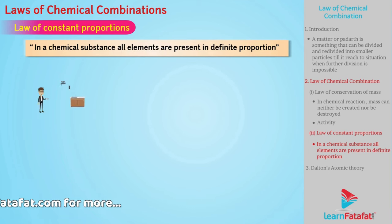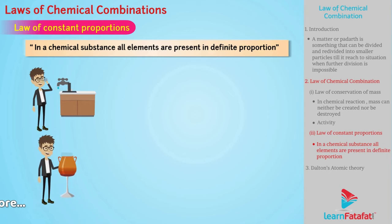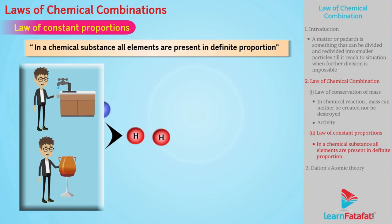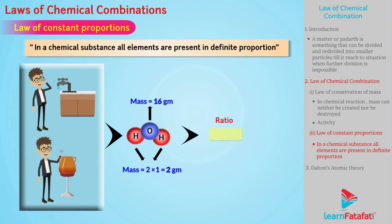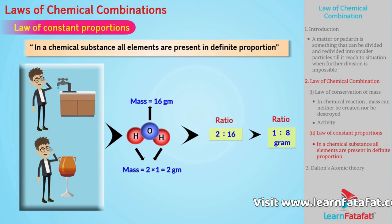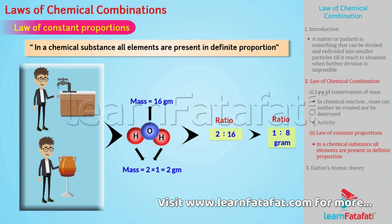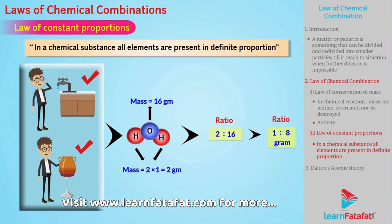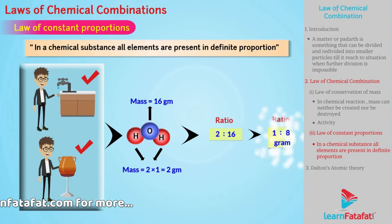If you take water from tap and water from pot, both will have 2 hydrogen and 1 oxygen in it. Mass of oxygen is 16 grams and mass of 2 hydrogen is 2 into 1, i.e., 2 grams. So, ratio of mass of hydrogen to mass of oxygen is 2 to 16, that is 1 to 8 grams. That is, irrespective of its source, water will have constant proportion of 1 to 8.